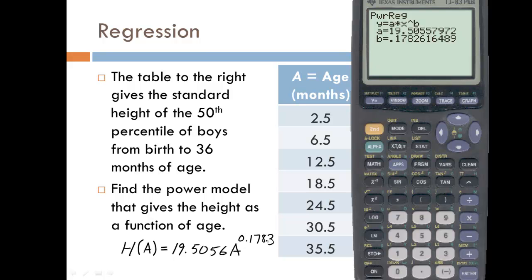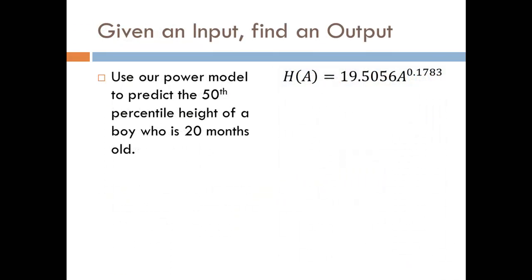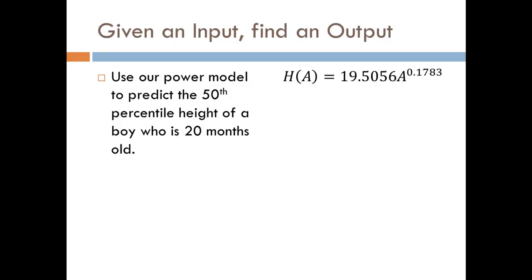So now that we have our function, our model, let's see how we can use it. So first if we're given an input value can we find the corresponding output value? For example, say we wanted to compute the 50th percentile height of a boy who is 20 months old. Well this 20 months is the A value. So A equals 20 months.